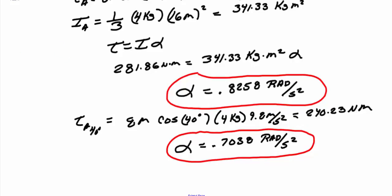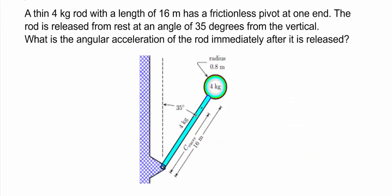The second problem: I have a 4-kilogram rod with a length of 16 meters and a frictionless pivot at one end. The rod is released from rest at an angle of 35 degrees from the vertical. At the end of the rod I also have a 4-kilogram solid sphere with a radius of 0.8 meters. We want to find the angular acceleration of the rod-sphere system immediately after it's released.